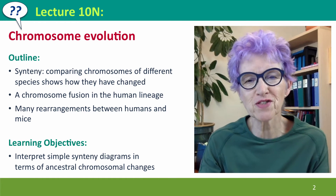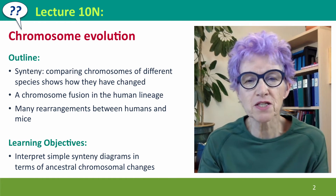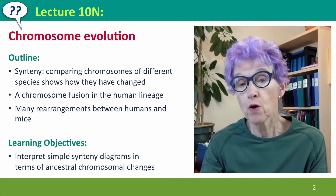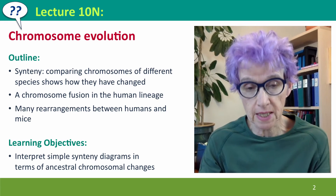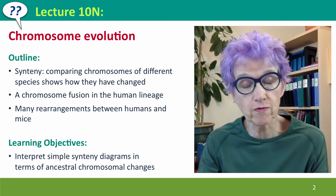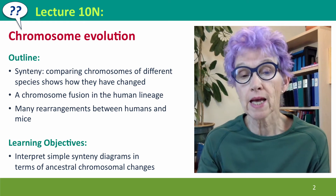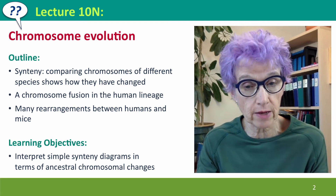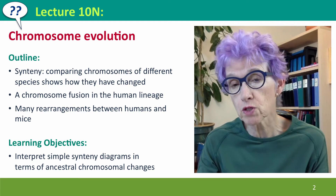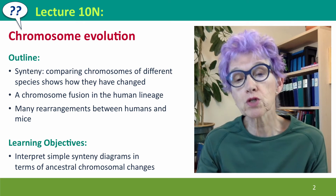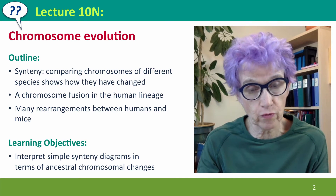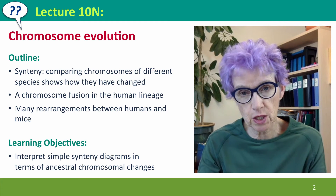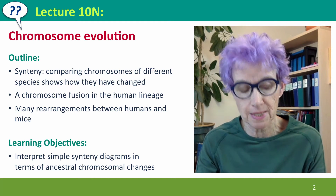Hi, everyone. Welcome back to Useful Genetics. This is Lecture 10N, where we're going to talk about chromosome evolution. We'll talk about the concept of synteny — how the arrangement of genes on chromosomes can, by its homology with that in other species, show us how chromosomes have evolved. We'll also talk about a particular chromosome fusion in the human lineage and about the many rearrangements that have happened between humans and mice.